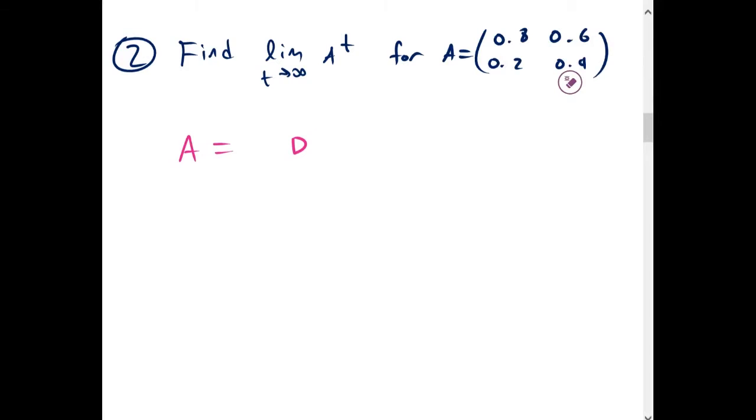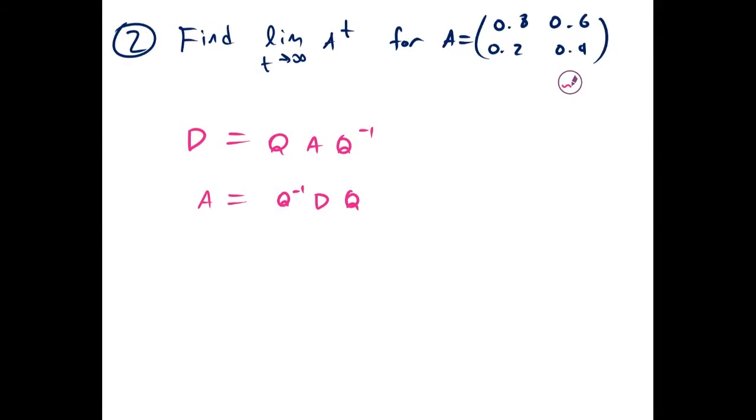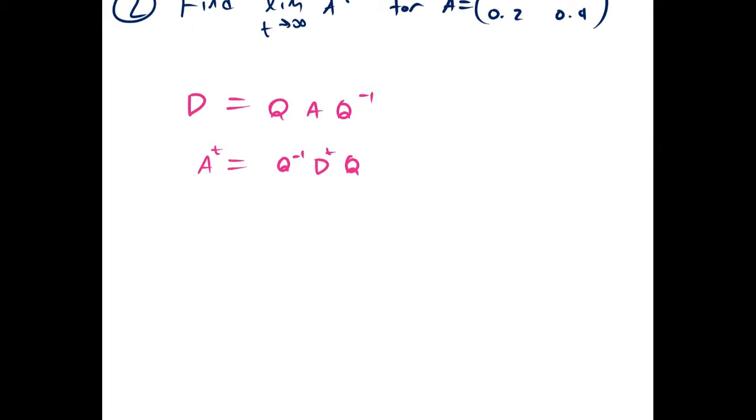We're going to use the relation we used last time: D equals Q A Q inverse. We're going to solve for A. That gives us A equals Q inverse D Q. If we take this to the t power, it'll take our diagonal matrix to the t power, which is easier to compute.